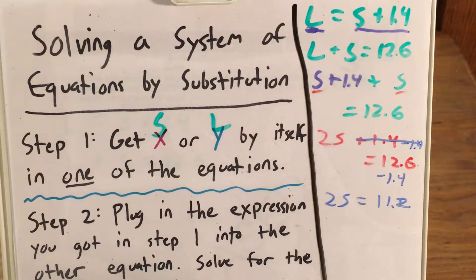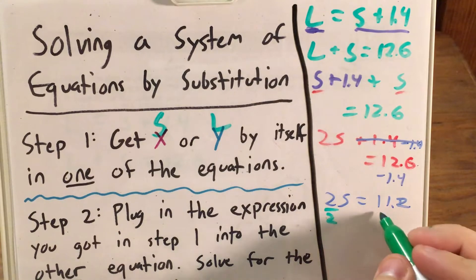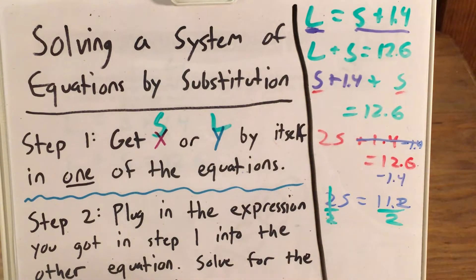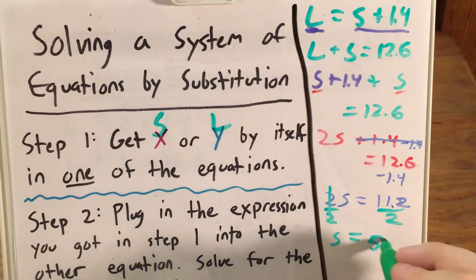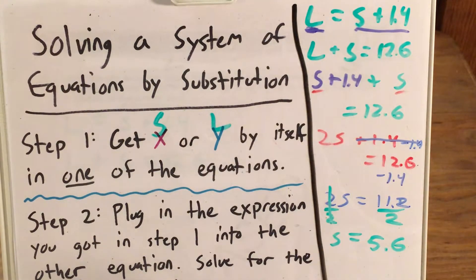And now all I have to do is divide. Divide the left side by two, the right side by two. Two divided by two cancels. And I'm left with the small dog's weight equals 5.6 pounds.